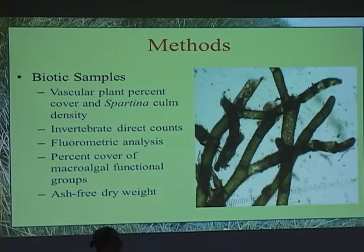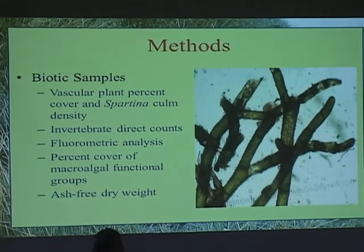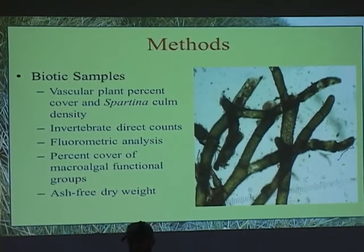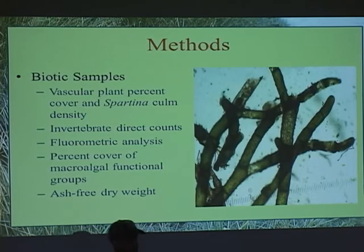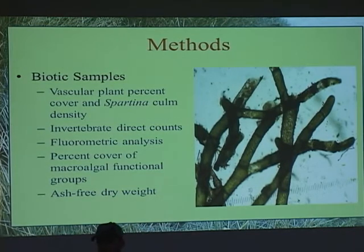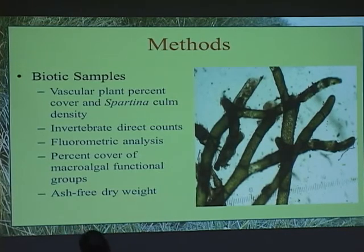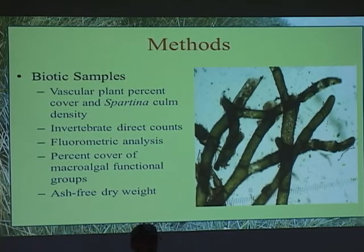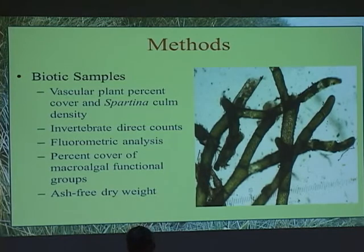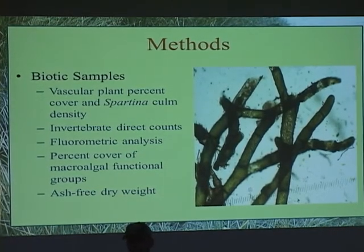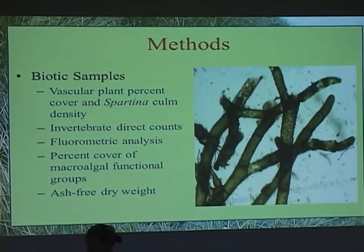For biotic samples, I'm looking at vascular plant percent cover and Spartina culm density, complementing what they're doing at Humboldt Bay National Wildlife Refuge. I'm measuring that with a half-meter by half-meter transect and just visually estimating. For invertebrates, I'm taking 5.5 centimeter diameter cores to a depth of 10 centimeters, which seems fairly standard in the literature. I take core samples to the lab, fixing them in a 10% formaldehyde solution with 200 milligrams of rose bengal, which is a red dye that stains living tissue to make identification easier when I'm sifting through it. Then I sift through them and place them in a 70% ethanol solution.